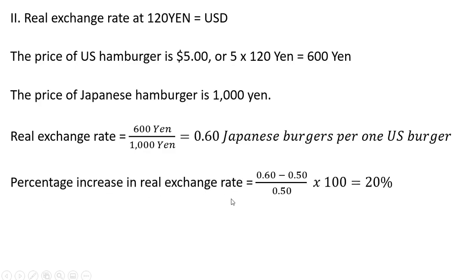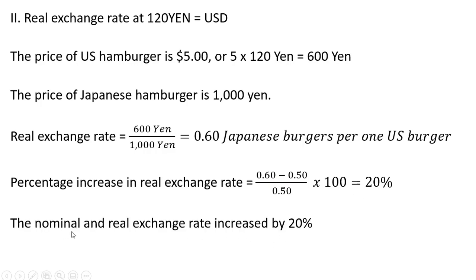The percentage increase in the real exchange rate: our new real exchange rate is 0.6, our old real exchange rate was 0.5, so the percentage change gives us a 20% increase. We've shown that both the nominal and real exchange rate increased by 20%. The underlying assumption here is that the price of the US hamburger is still $5 and the price of the Japanese hamburger is 1000 yen — so holding prices constant. Okay, that's it.